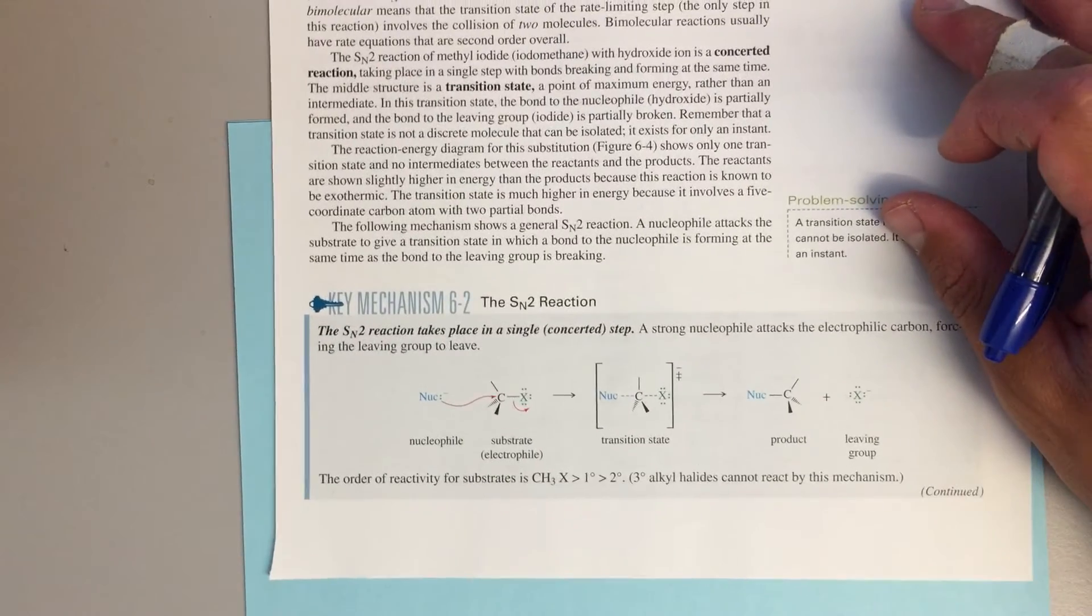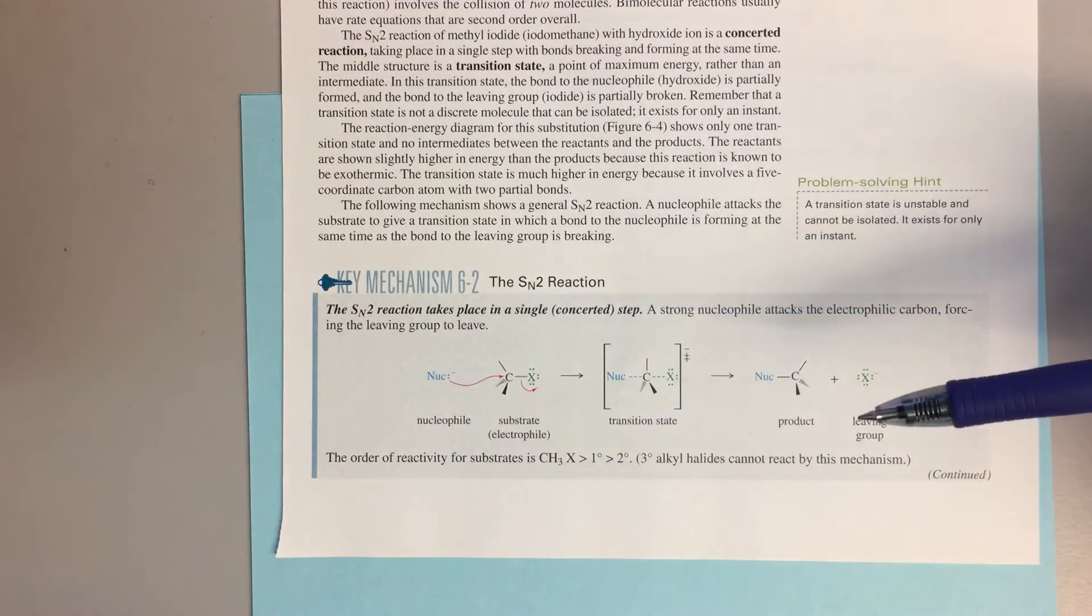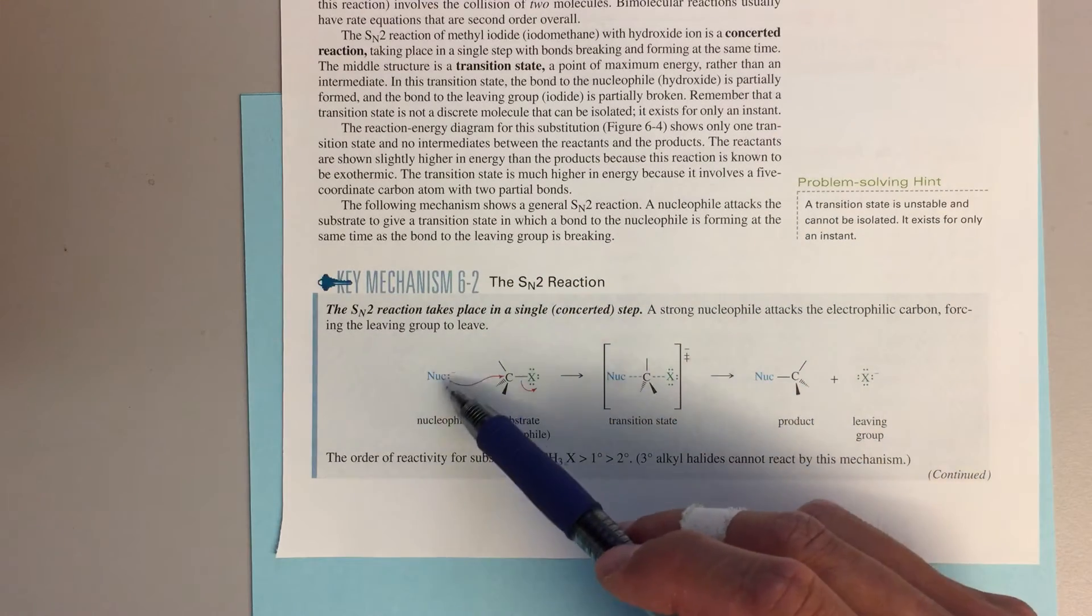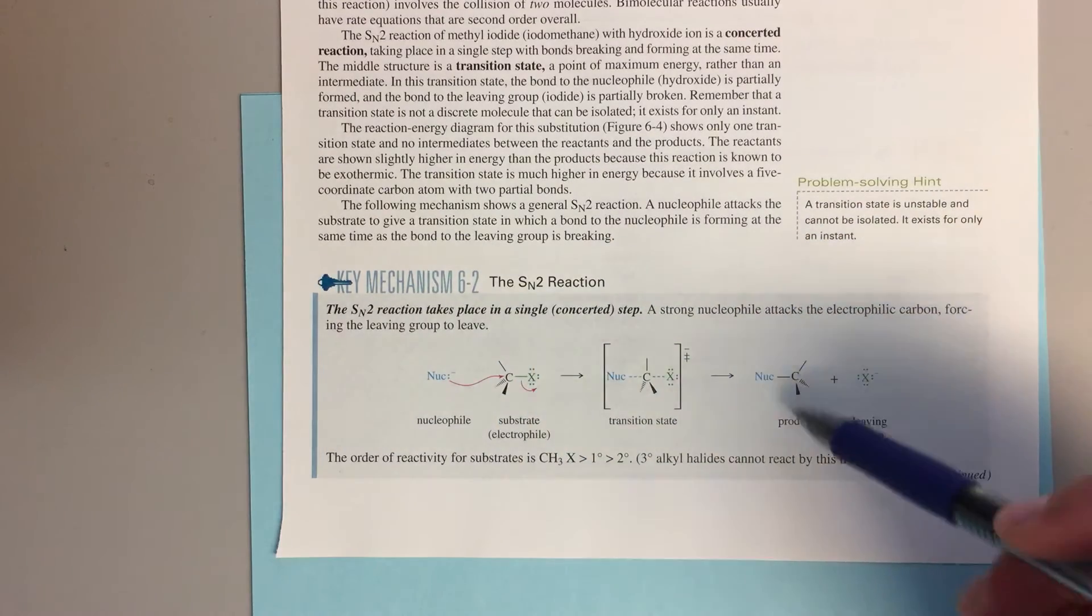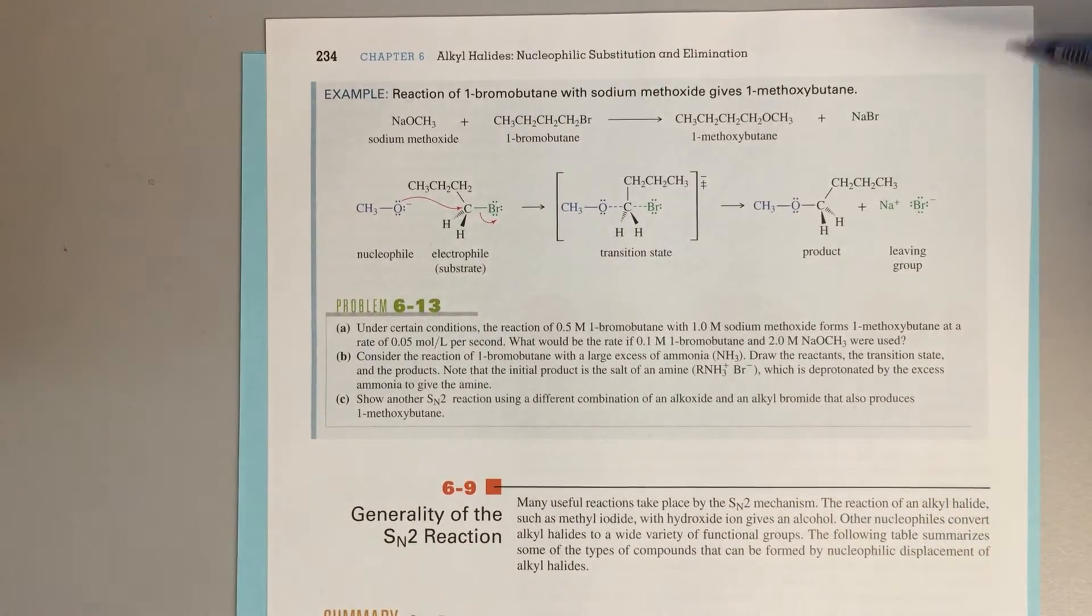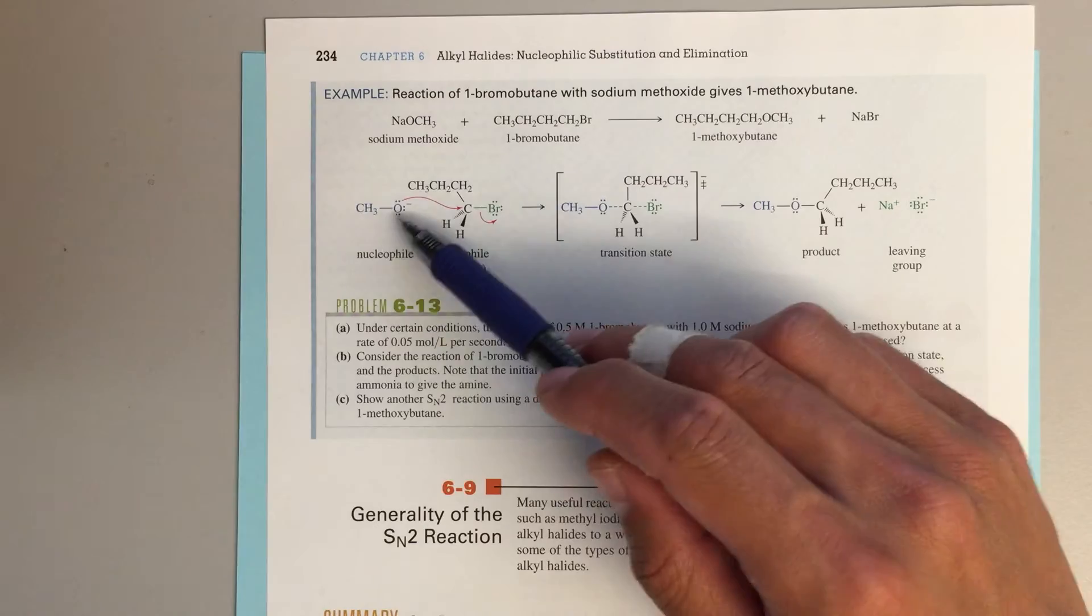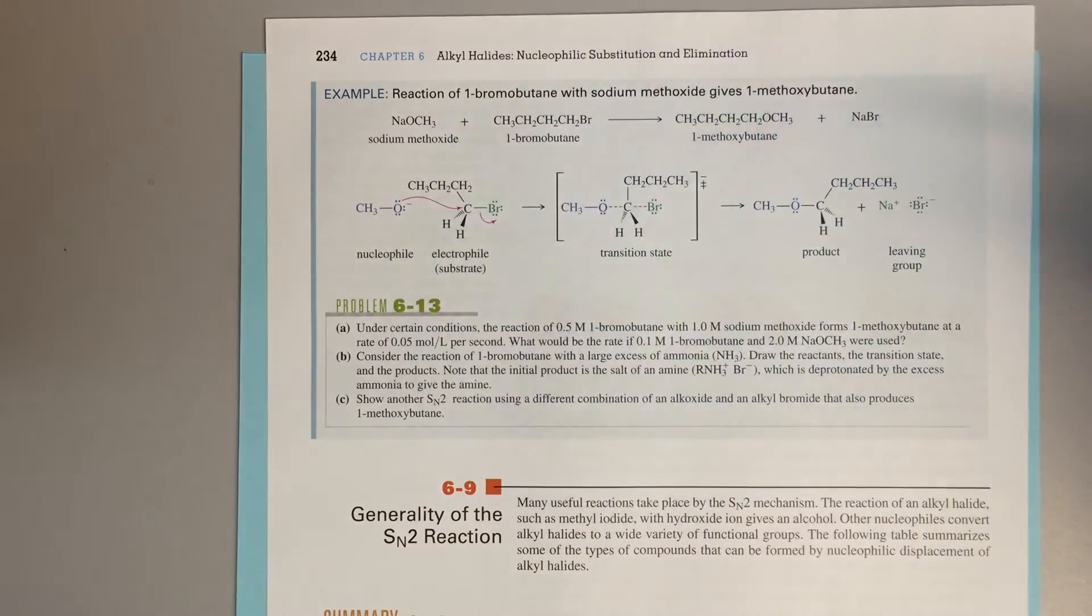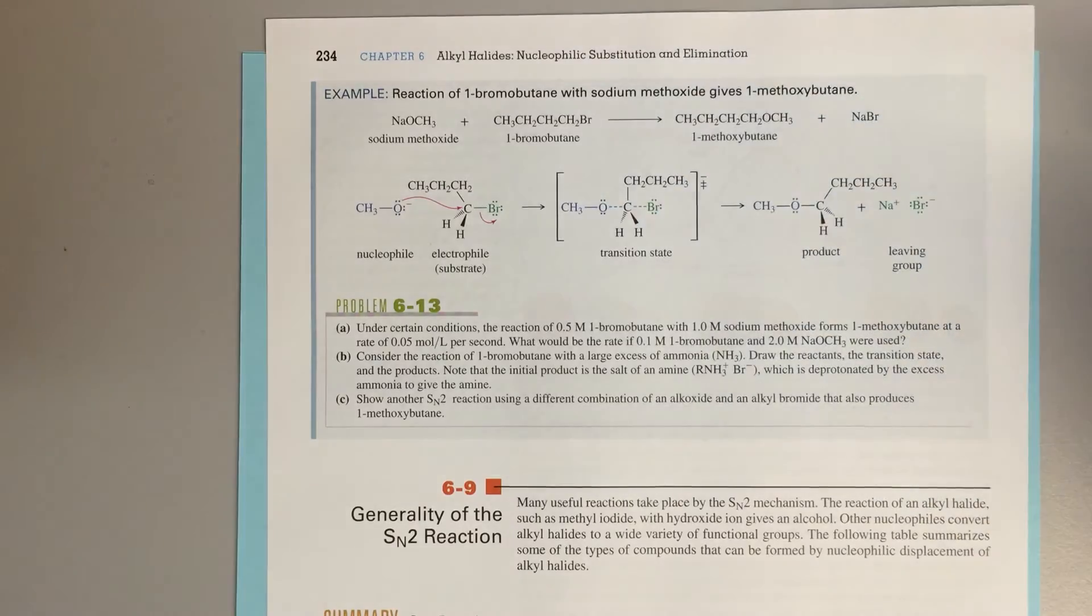Looking back, if we look all the way back to section 6.2, that's where we're talking about this SN2 reaction for the first time. Here's our key mechanism, we've got a concerted step where our nucleophile attacks on an alkyl halide, we've got this transition state where things get flipped, and then we form this product. If we actually flip the page and we look at the example reaction, they give us sodium methoxide, CH3O minus, attacking our alkyl halide, kicking off the bromine as our leaving group, but leaving us with an ether.